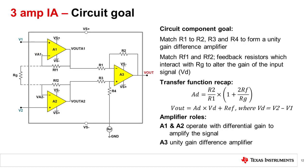In a typical 3-amp IA, the goal is to match R1, R2, R3, and R4. This creates a unity gain difference amplifier as we analyzed in a previous lecture. The other goal is to match RF1 and RF2. These are the feedback resistors which interact with RG to alter the gain of the signal. To recap, the gain of a 3-amp IA is defined as R2 over R1 multiplied by 1 plus 2RF over RG.